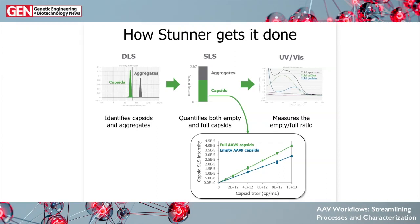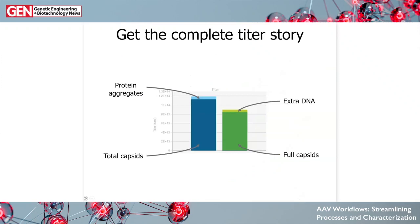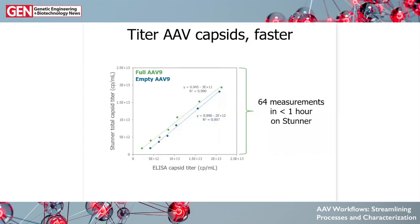Stunner calculates capsid titer by reading SLS intensity — say 2×10⁻⁵ — which gives a range of capsid titers that could fulfill that intensity. To get down to a single answer, you need the empty/full ratio to know where in that line you lie based on how full your capsids are. You combine the SLS and DLS information with the UV-Vis information to get to one accurate capsid titer number. From all that data, Stunner understands the complete titer story: total capsids, excess protein signal from aggregates, full capsids present, and excess DNA.